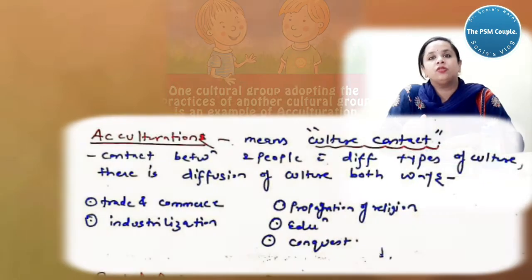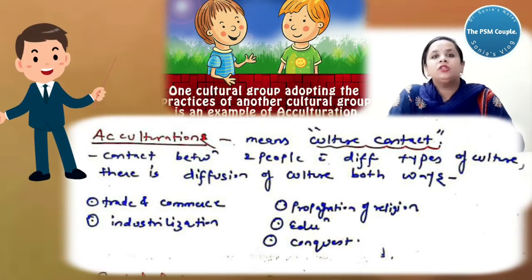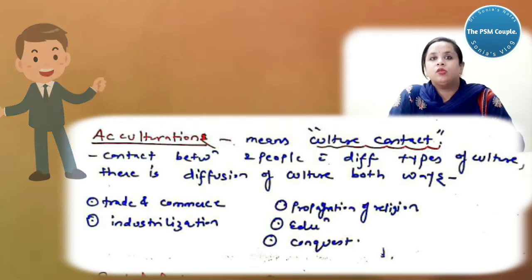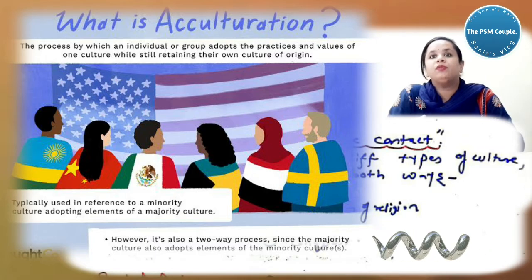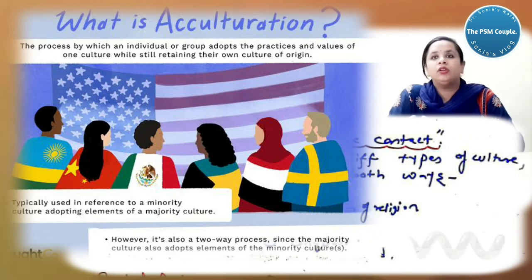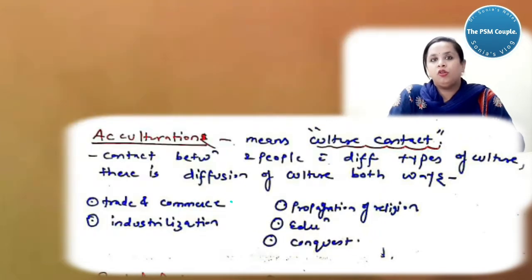Now what is acculturation? It is a definition quite often asked in your exams. Acculturation means culture contact, contact between two people with different types of culture. There is diffusion of culture both ways. How it can be? Through trade and commerce, through the industrialization, through the propagation of religion, education and context.